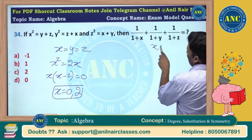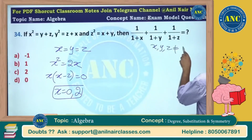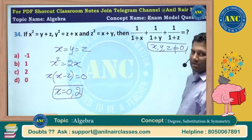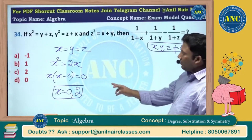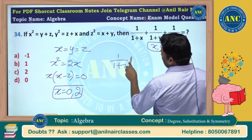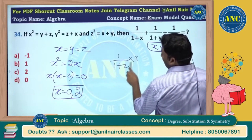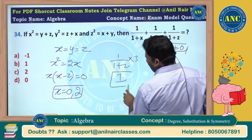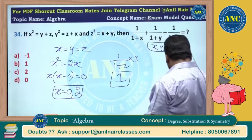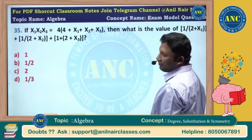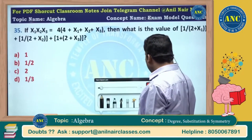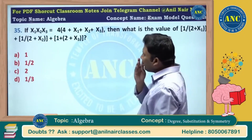Let us put in the equation where x, y, z are not equivalent to 0, so x is 2. Then 1 by 1 plus 2 into 3 gives 1 by 3 into 3, and the answer is 1. Symmetric functions — if you get one, consider yourself lucky!